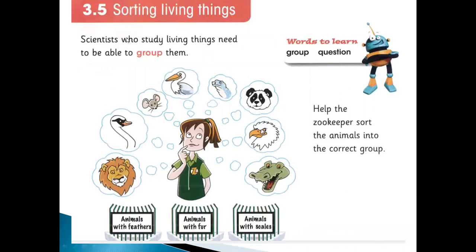Sorting living things — scientists who study living things need to be able to group them. We are making groups of different shapes according to different features. Help the zookeeper sort the animals into the correct groups: animals with feathers, animals with paws, and animals with scales. Animals with feathers — for example, birds.